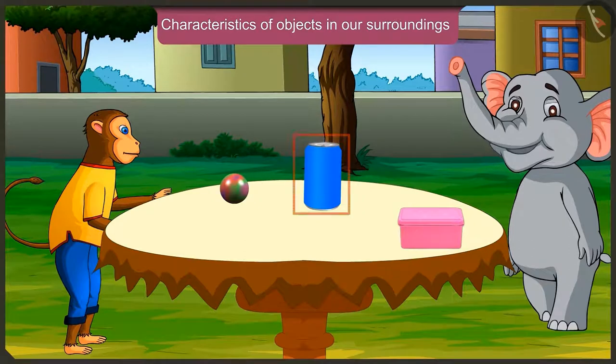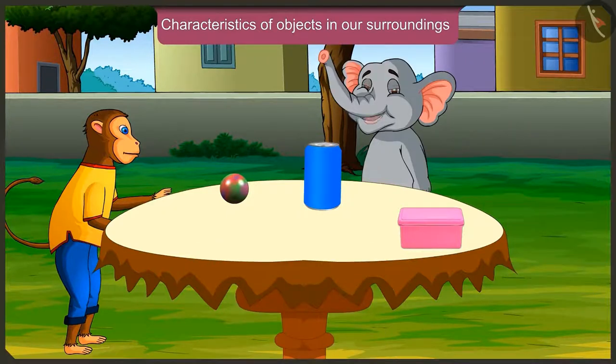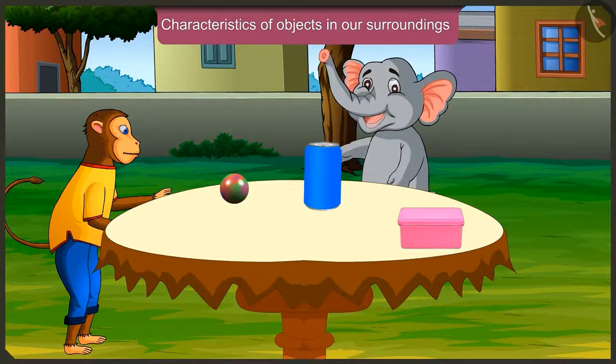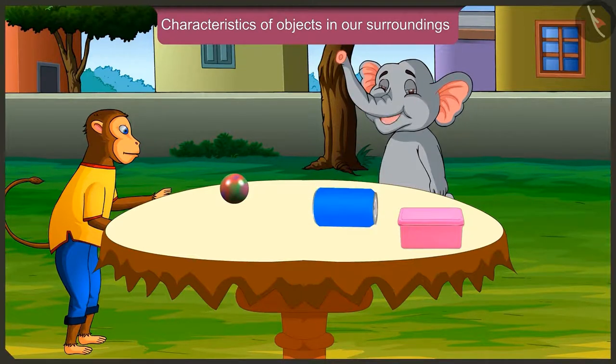And the tin box? Oh yes, this tin can has a cylindrical shape. That means it's a cylinder. So we can put it upright and slide it. And also roll it like this.